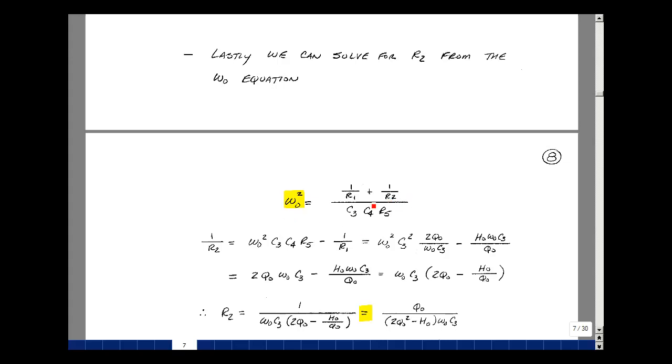Multiply this over here, and then bring the R1 on the other side of the equation, minus 1 over R1, and we've got the value of 1 over R2. Let's substitute in the value for our components that we've already solved for. We've got omega-naught squared, C3 times C3, so C3 squared. R5 was equal to 2Q0 over omega-naught C3, and R1 was equal to Q-naught divided by H-naught omega-naught C3. I can pull out a common omega-naught C3, left with a 2Q-naught minus H-naught divided by Q-naught.